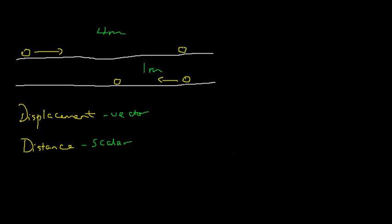Let me make a small table here with two columns — one for distance and one for displacement. Now let's look at the first case. The distance when the ball moves from there to there is 4 meters.